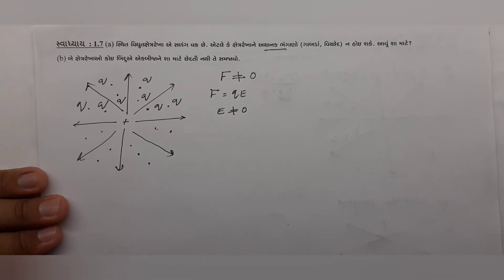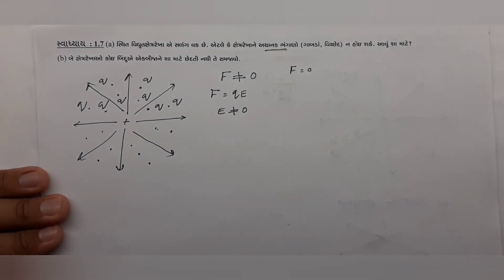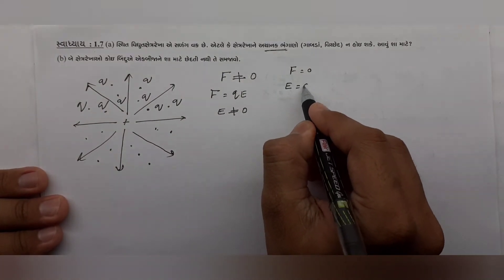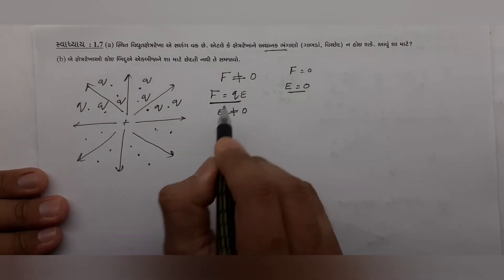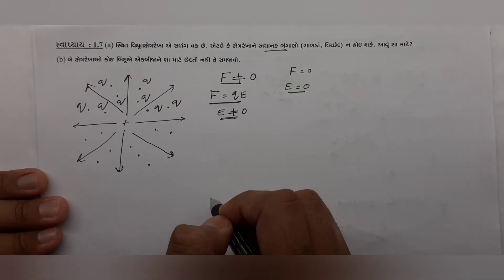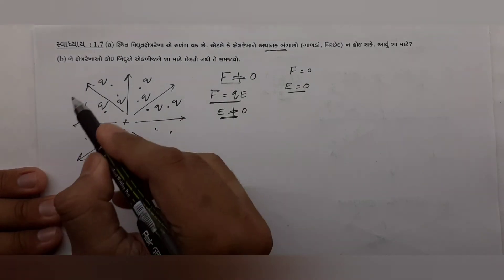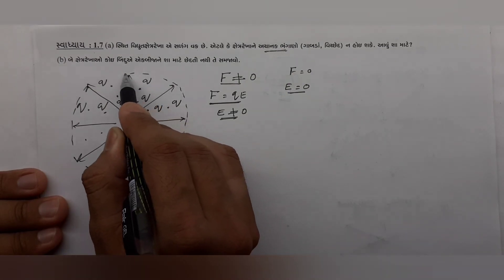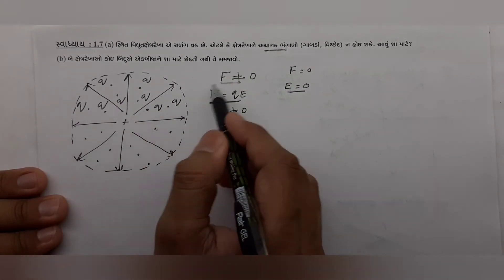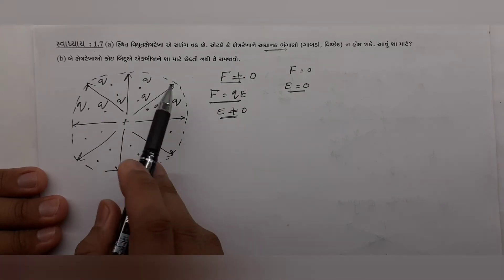ધારો કે એ જ બિંદુ હોય જ્યાંથી કોઈ એક વિઝ્ બોલ પર દળ શૂન્ય બને — પણ એ શક્ય નથી, કારણ કે જો દળ શૂન્ય બને તો ક્ષેત્ર શૂન્ય. F = qE — જો F શૂન્ય નથી તો E પણ શૂન્ય નથી. આ ક્ષેત્ર ની અંદર ના કોઈ પણ બિંદુ પાસે ક્ષેત્ર શૂન્ય દર્શાવતુ નથી, તો ક્ષેત્ર રેખા અચ્ચાનક તૂટી ના શકે.